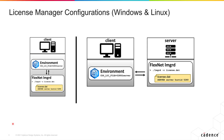The next thing to keep in mind are the different License Manager configurations that we have available. This image shows the different configurations for Windows and Linux operating systems. You can use everything on one machine — simply a single machine running your instance of Fidelity CFD and/or Fidelity Pointwise and also the Cadence License Manager. In this case your client machine is also going to be acting as the server machine.